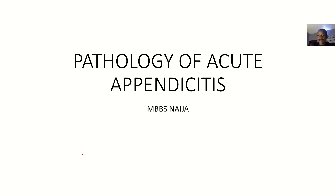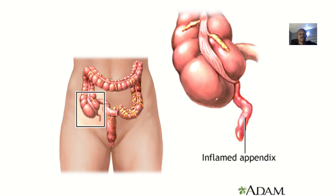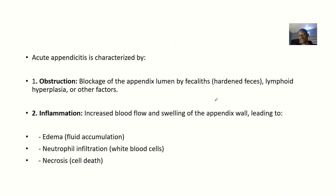Let's briefly talk about the pathology of acute appendicitis. When we talk about the pathology of a disease condition, we're basically looking at a step-by-step account of how this disease came to be — including the characteristics of the disease. So, the pathology of acute appendicitis begins with obstruction.